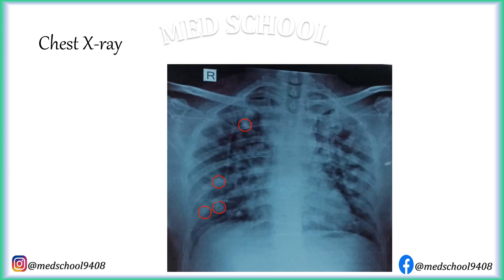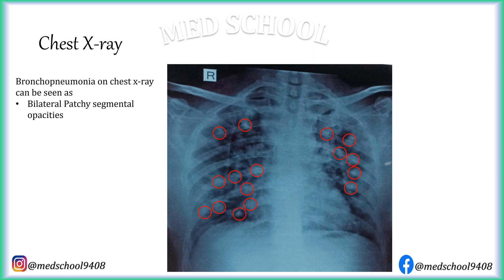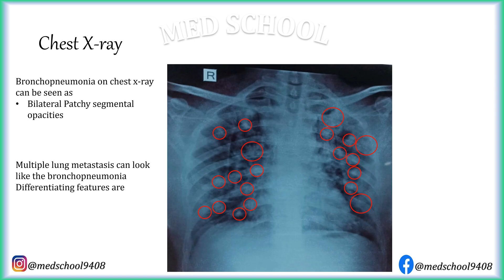Sometimes pneumonia occurs as multiple small consolidations involving both lungs and multiple segments. This pattern is called bronchopneumonia. Bronchopneumonia on chest x-ray can be seen as bilateral patchy segmental opacities. Over time, these consolidations can coalesce to form large consolidations. Multiple metastases can look like bronchopneumonia; differentiating features are sharp margins in metastatic lesions and absence of fever.